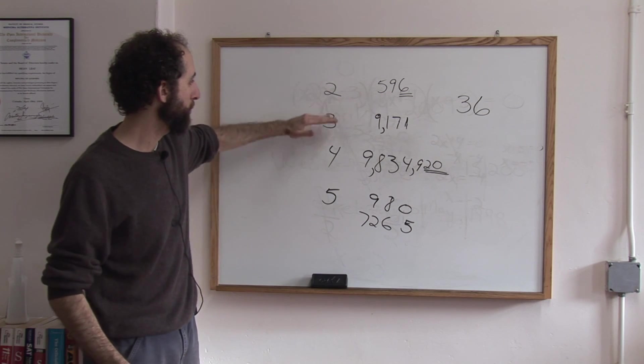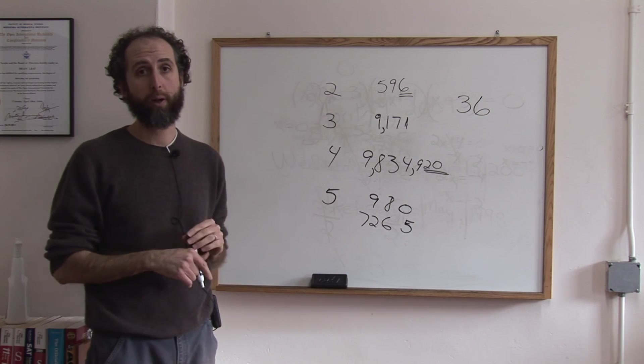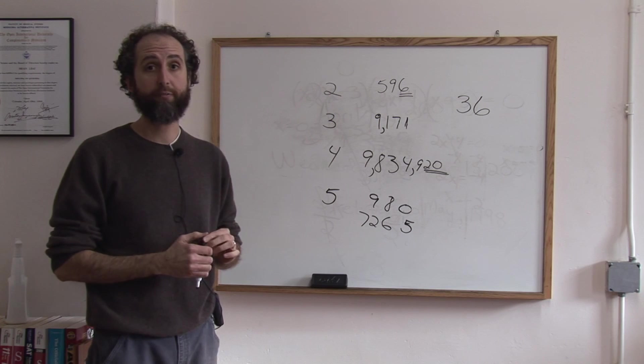And if something's divisible by 2, 3, 4, or 5, it's not prime. Beyond that, you can test it by dividing it on your calculator.